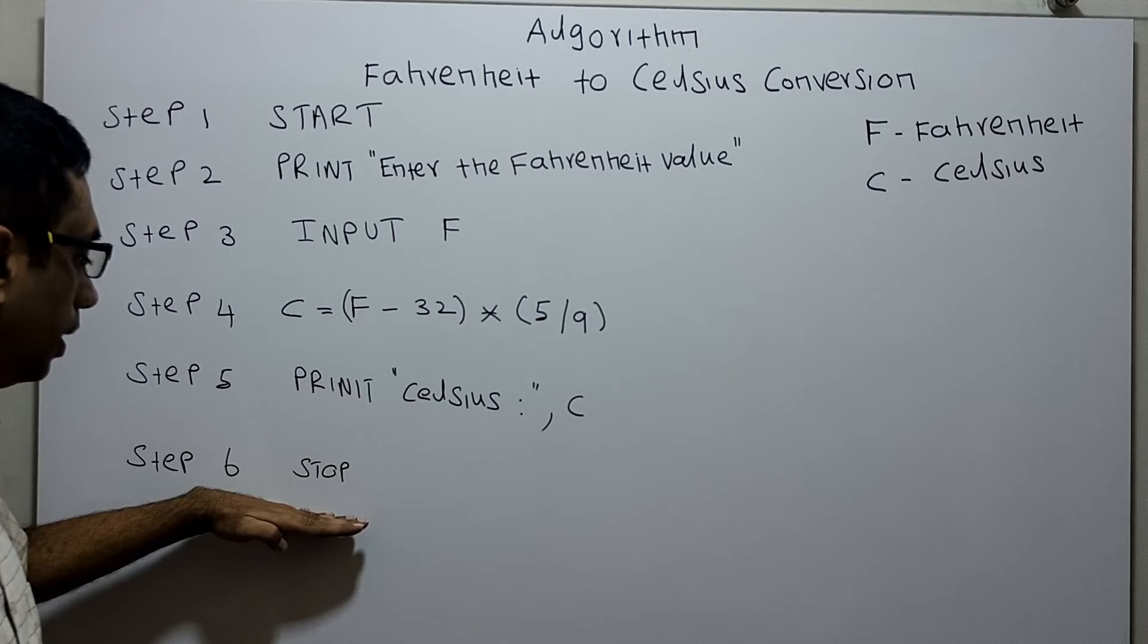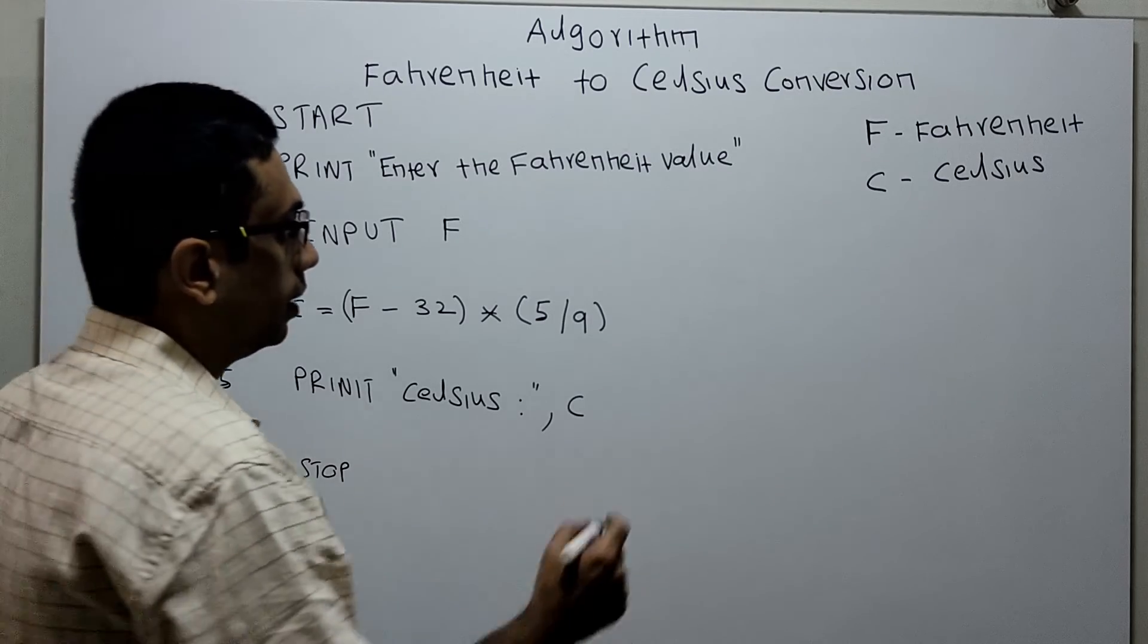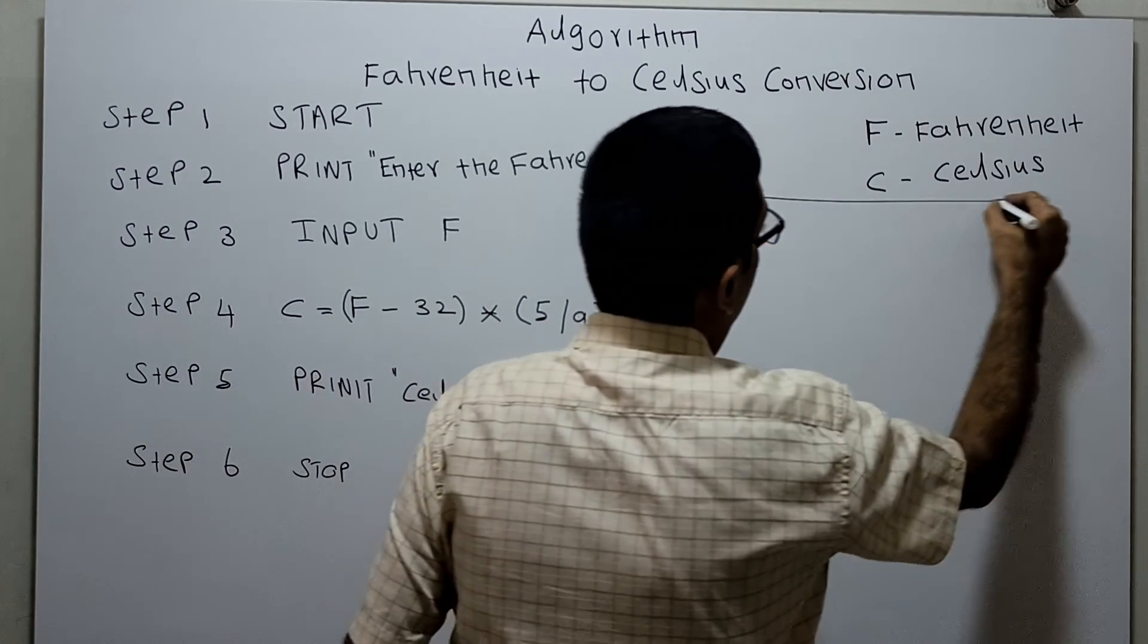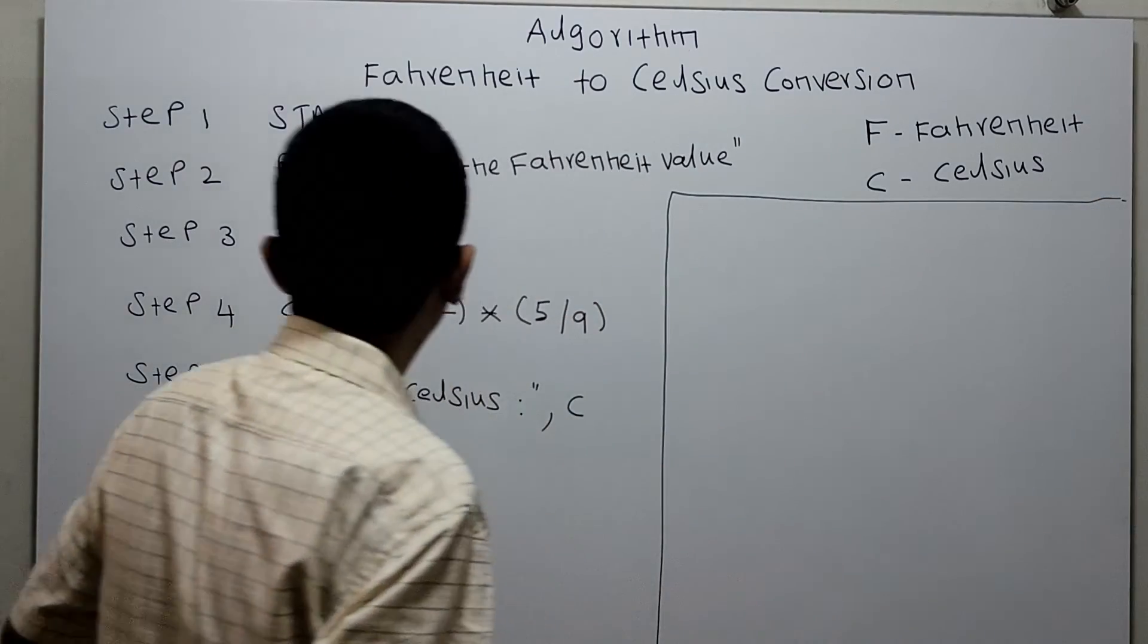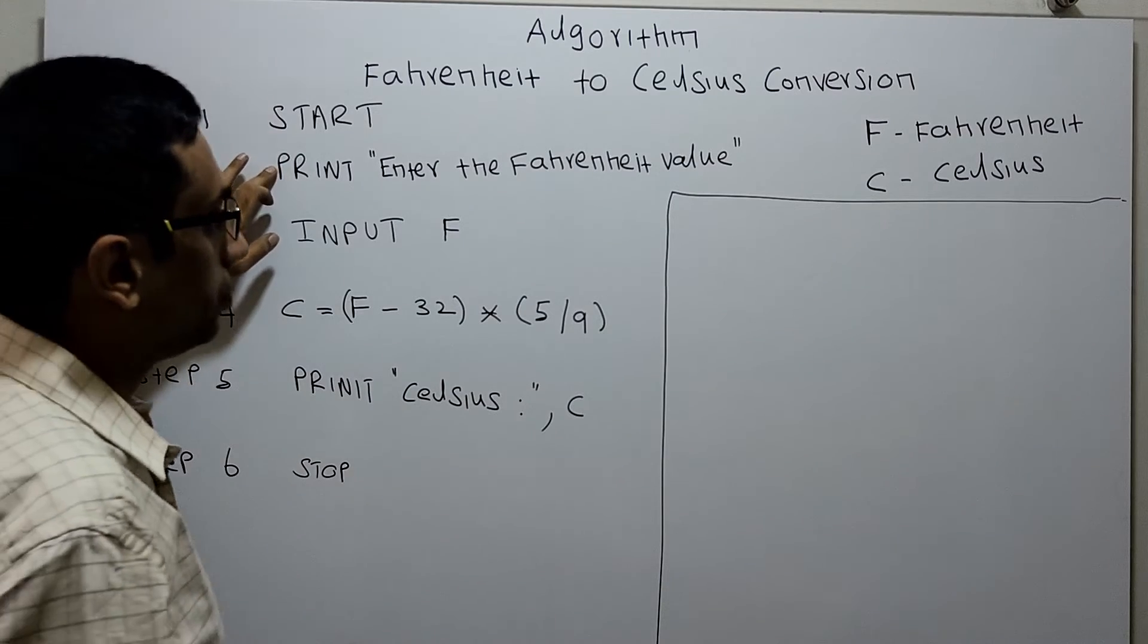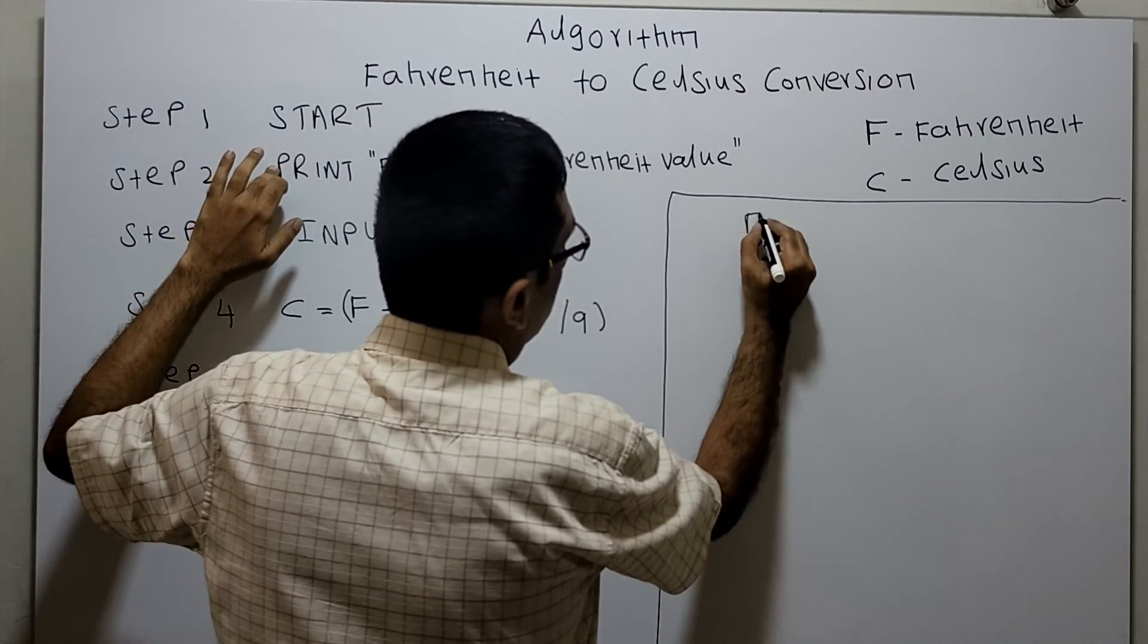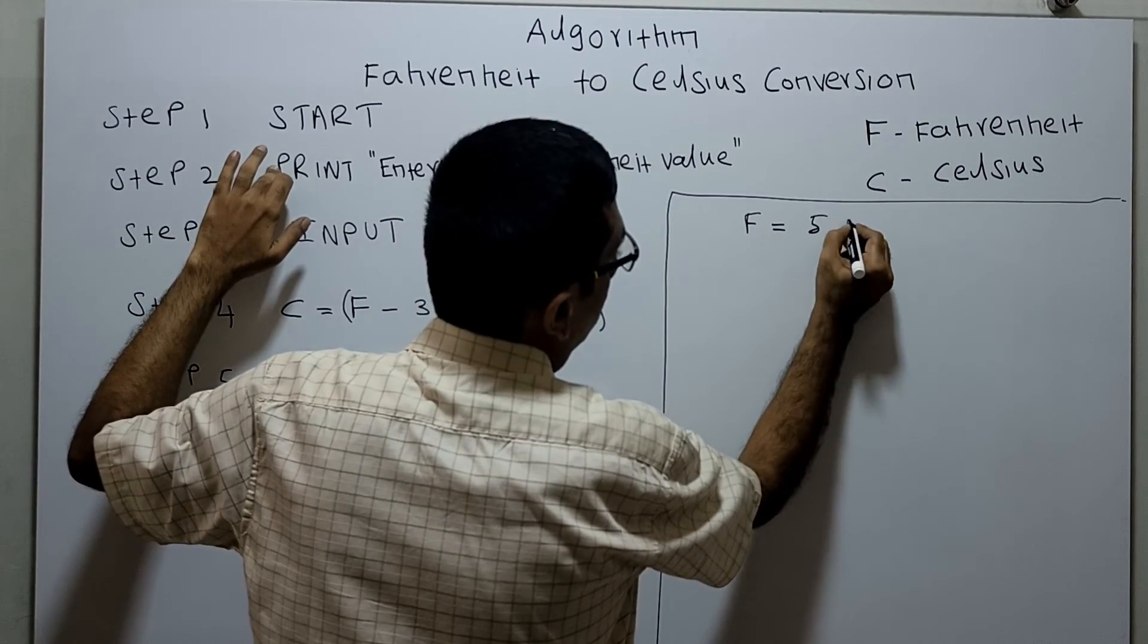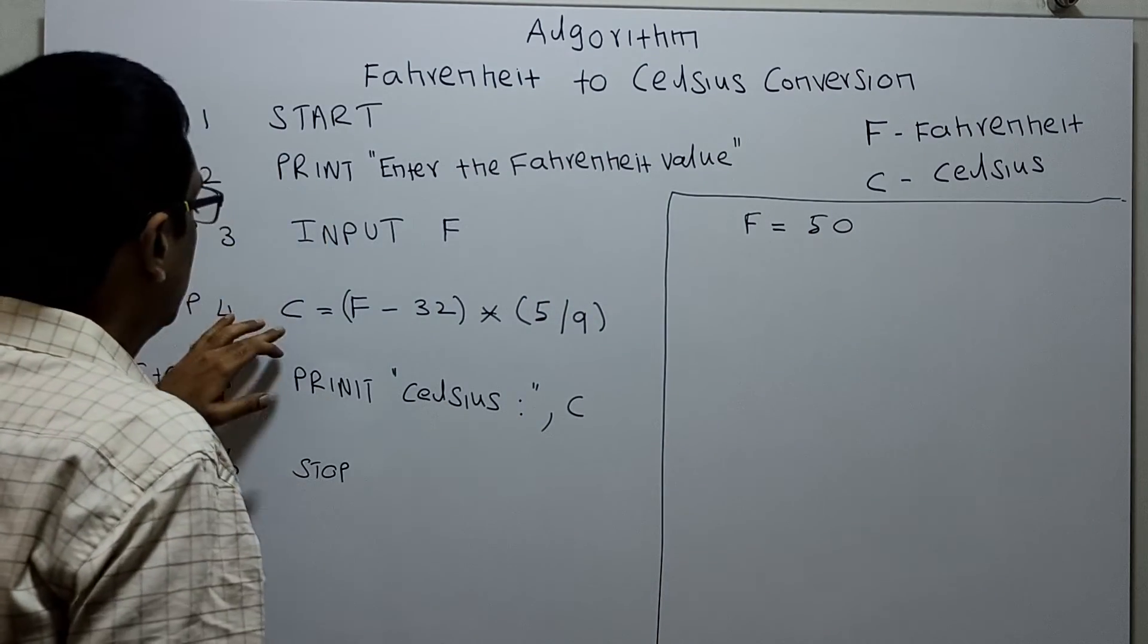We will work out how this algorithm works. Start by printing 'Enter the Fahrenheit value.' I obtain the Fahrenheit equal to 50 degrees.